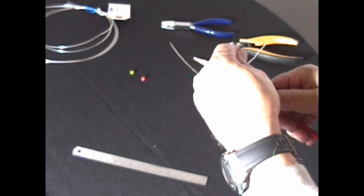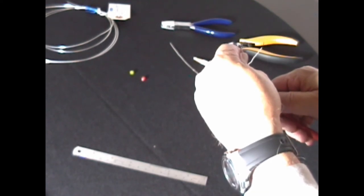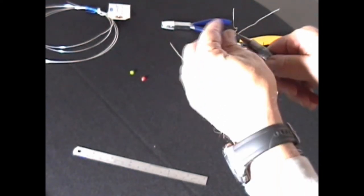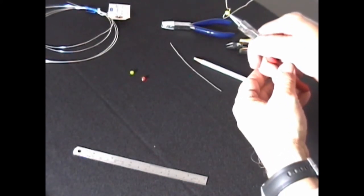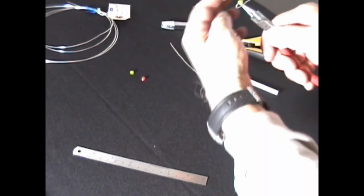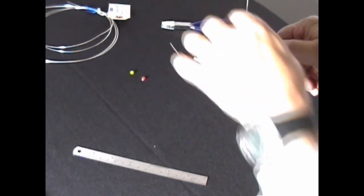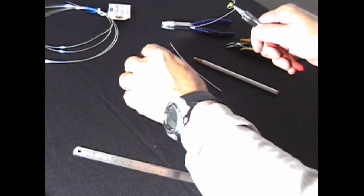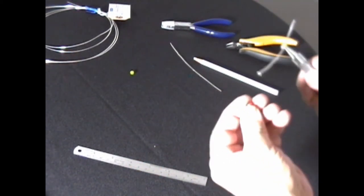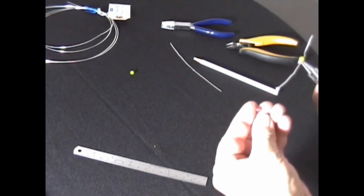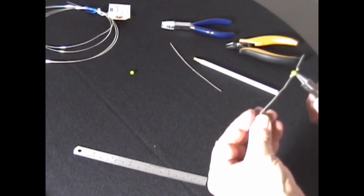Put your pliers just below the bend, hold it vertical, bend the wire again 180 degrees, and then you take one of your red beads and you thread it through.